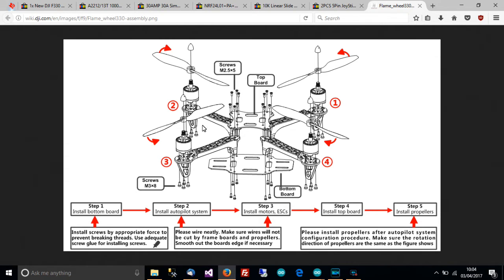You need something called an ESC or you need four of them actually. Well you can either have four or you can have four in one. But the ESC would lie across the frame here and here and here and here. You need four of these ESCs and the ESCs are basically speed controllers.